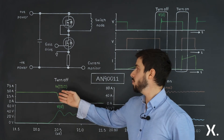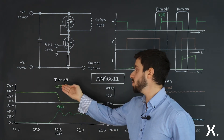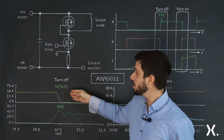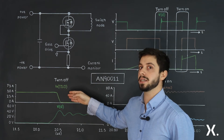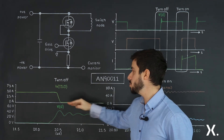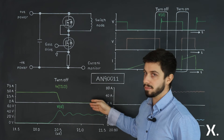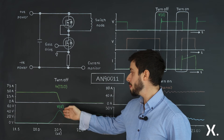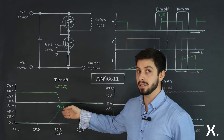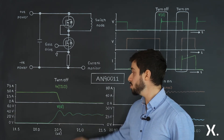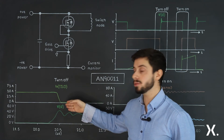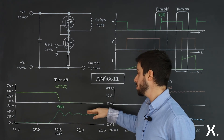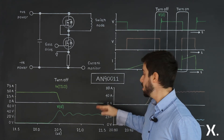On my right we can see the turn off event. At the top we have the current and at the bottom the low side VDS. For the current we assess the slope by measuring di/dt, undershoot, steady state value and settling time. For the low side VDS we measure the slope by quantifying dv/dt, measure the overshoot and peak voltage value, and look at the oscillations, damping factor, steady state value and settling time.